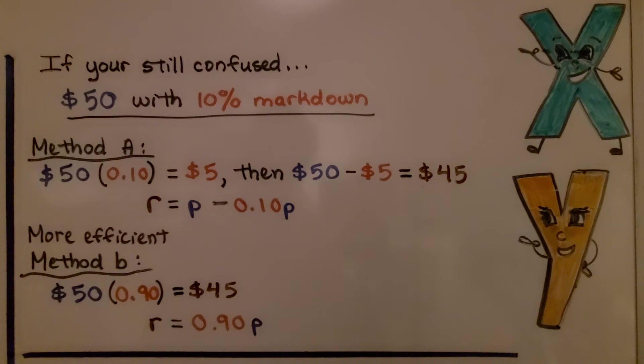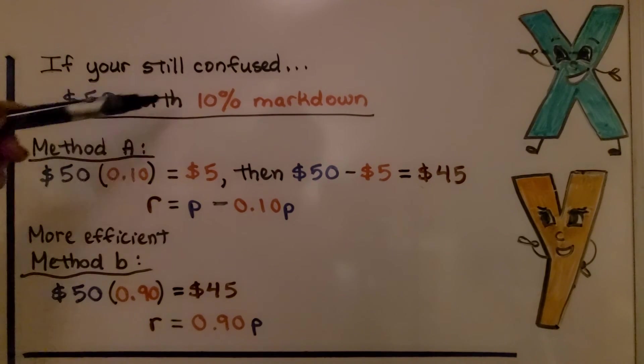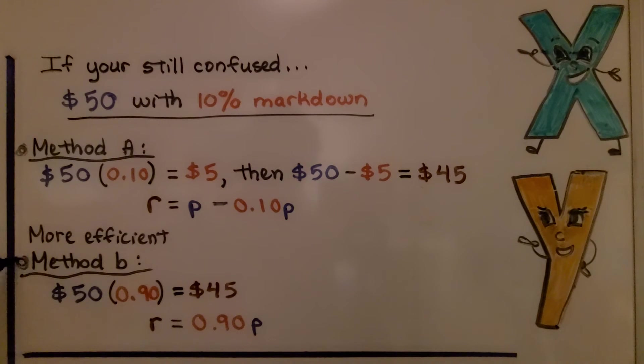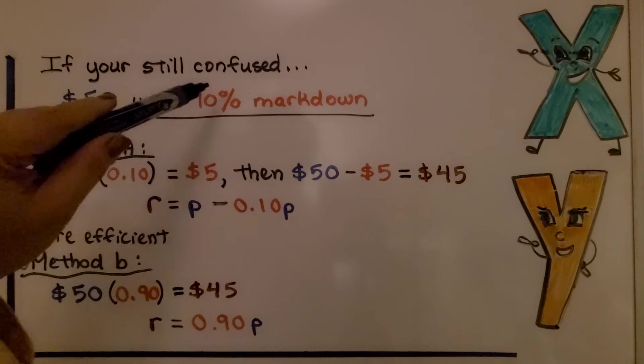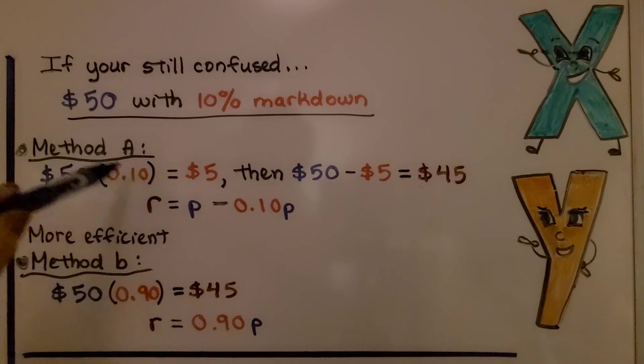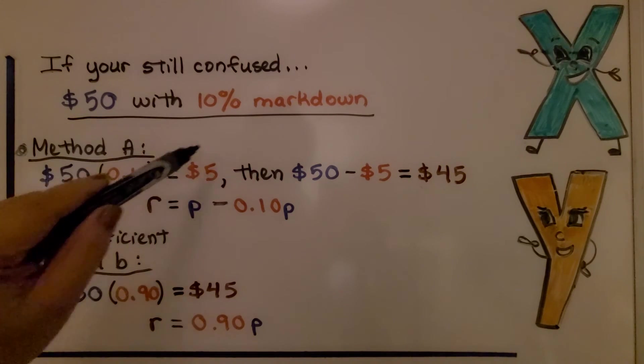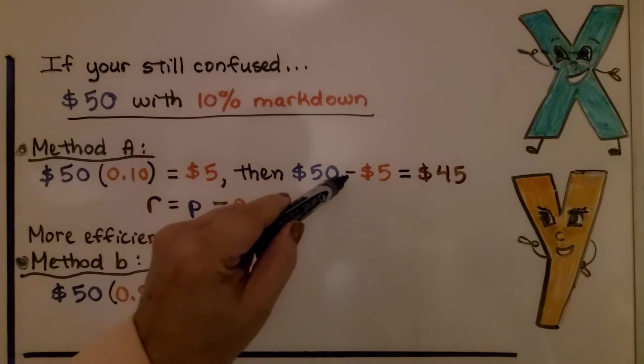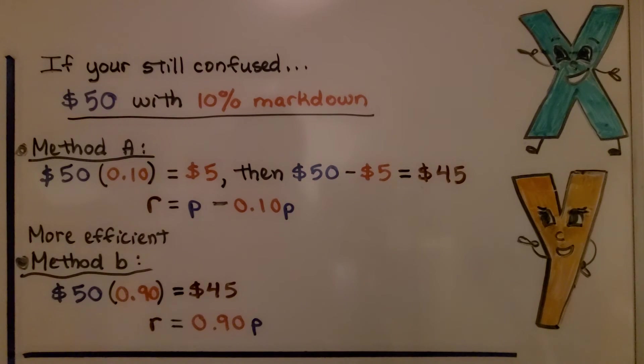If you're still a little confused about that, look at this. If we have a $50 item with a 10% markdown, we can do it this way, or we can do it this way. So method A would be, we have our $50 item times 0.10 for the 10% markdown. We find what 10% of $50 is. It's $5. Then we subtract it from the $50. Then we get $45.